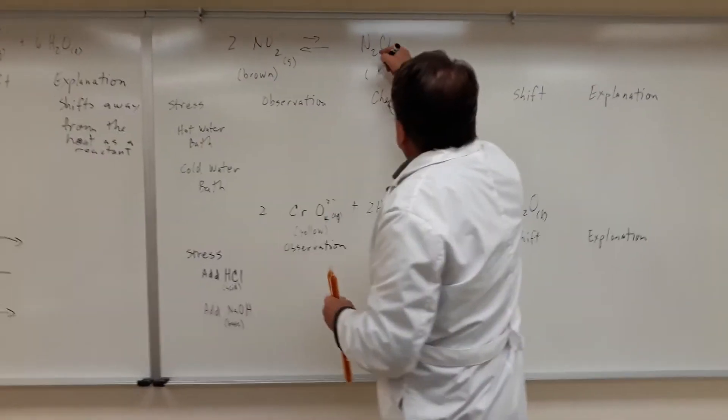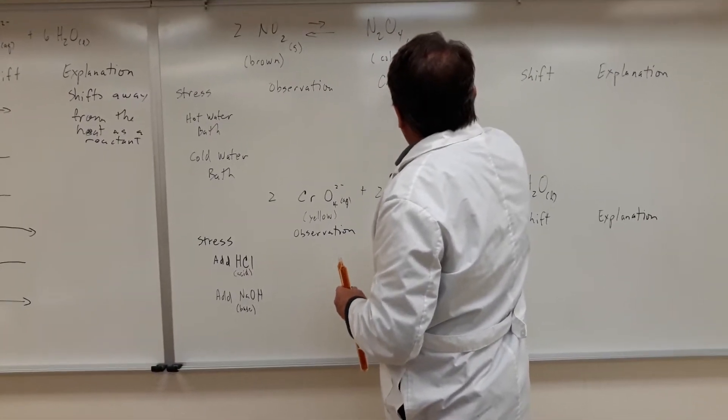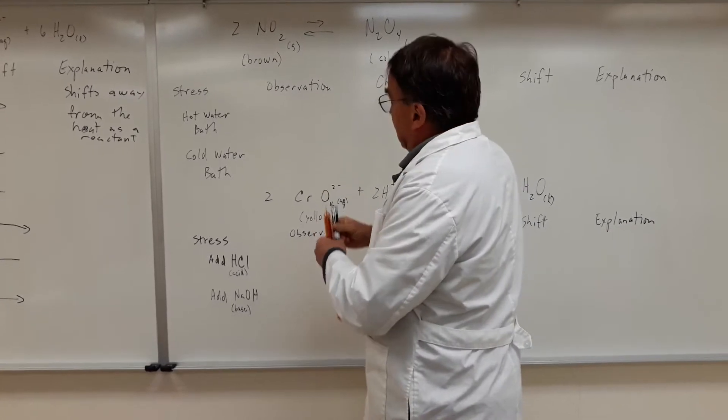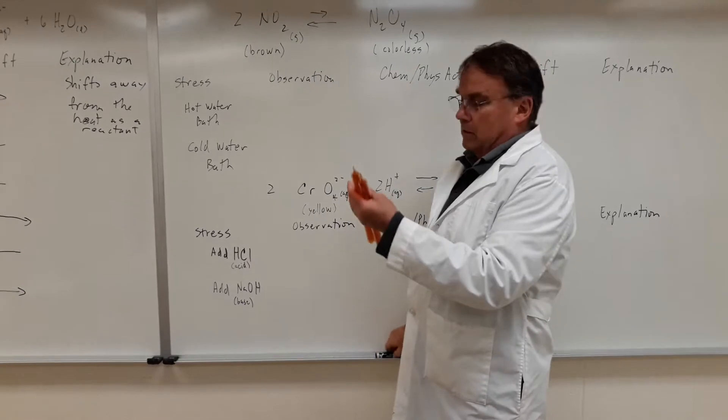Nitrogen dioxide is brown and dinitrogen tetraoxide is colorless. So we can see at room temperature the equilibrium lies in this direction, which is why that arrow is a little bit longer.